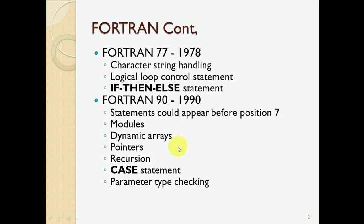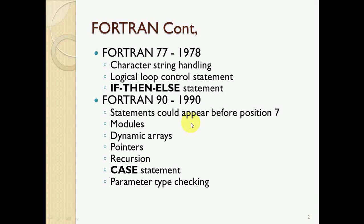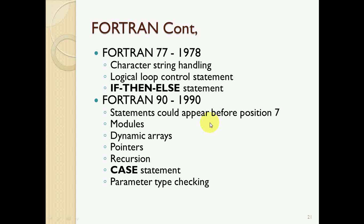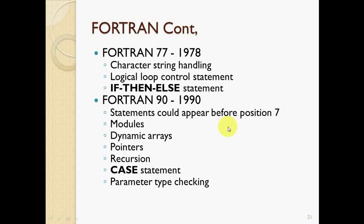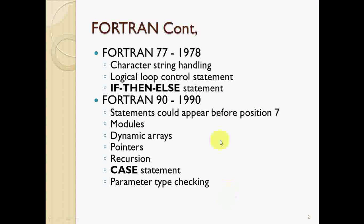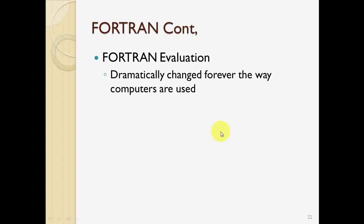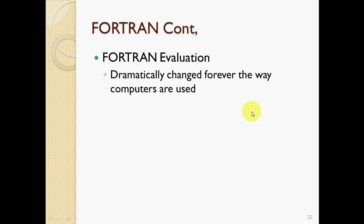FORTRAN 90, released in 1990, introduced many improvements including dynamic arrays, pointers, recursion, case statements, modules, and parameter type checking. It was developed by American engineers with a combination of engineering and analytical expertise. This concludes the FORTRAN evolution overview.